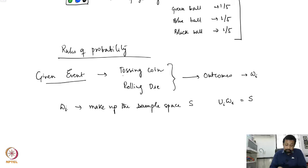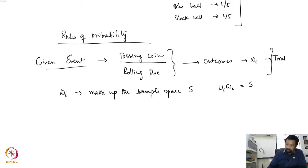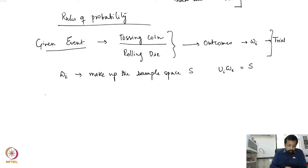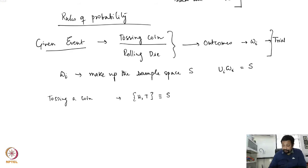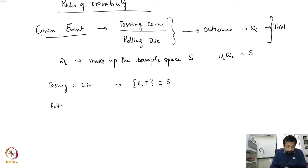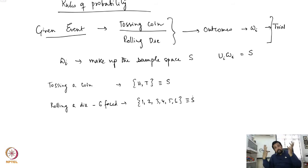This event where you have tossed a coin is typically what is called a trial. For tossing a coin, the outcomes are either head or tail, and therefore this is the sample space for this event. For rolling a six-faced die, the sample space is {1, 2, 3, 4, 5, 6}. All the outcomes taken together form the sample space. This choice of sample space clearly depends on the event and the type of probabilistic question you are asking.